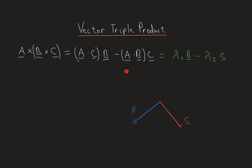Now why does this expression make sense intuitively? Here I've drawn the two vectors b and c. If we compute the cross product, we get a vector pointing upwards that is perpendicular to both vector b and vector c — that's what's important to remember.